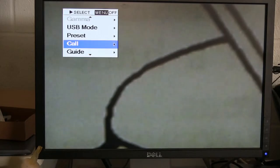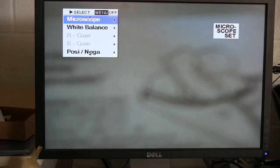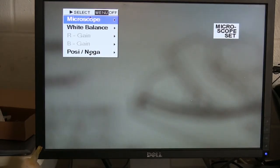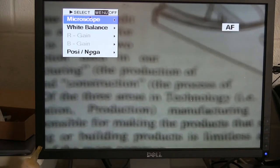To access the microscope for further zooming, go to the microscope, hit the right arrow over, go up to set, hit the menu button to select, and it will auto microscope the document. To focus that, hit auto focus once more.